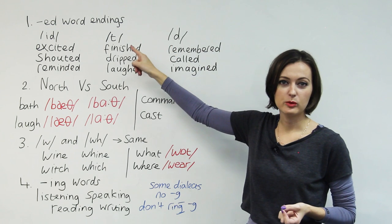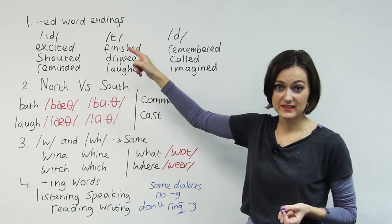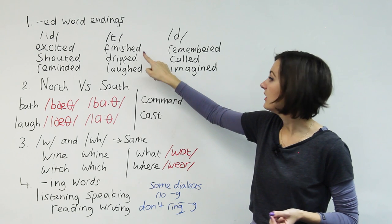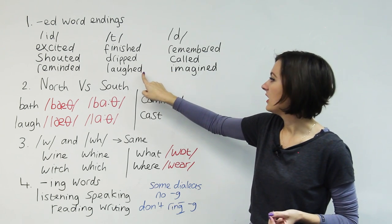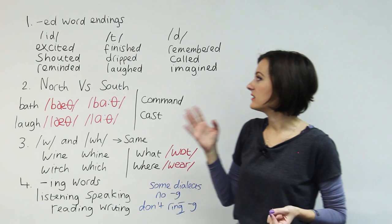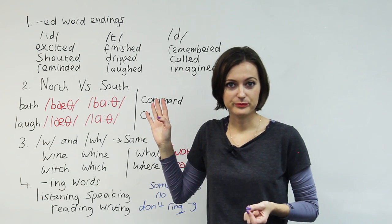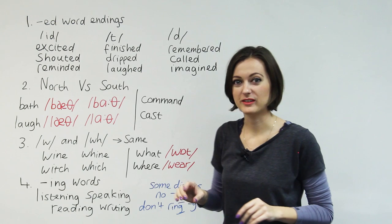So now we can talk about the ones that finish with a -t sound. Finished, dripped, laughed. They don't have the -ed sound. So that's an important thing to know about pronunciation.